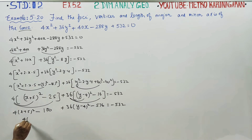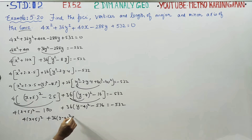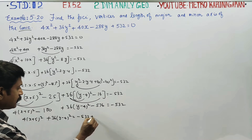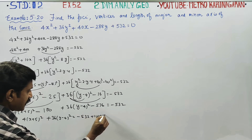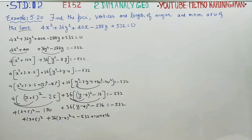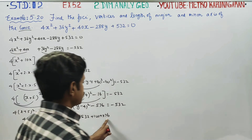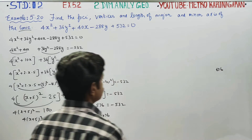We get: 4(x + 5)² + 36(y − 4)² = −532 + 100 + 576. Adding 100 and 576 gives 676, and 676 − 532 = 144.